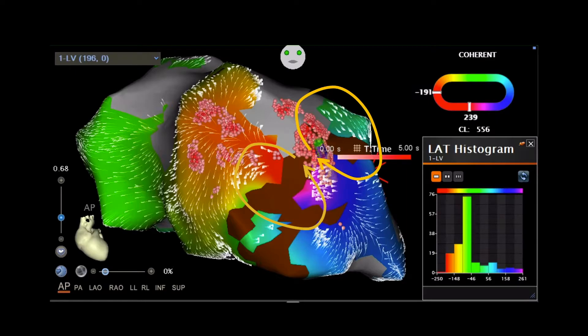However, this is an interesting case which shows that even using point-by-point mapping and just after having around 200 points, we were able to have an accurate estimate of the circuit of the clinical VT and the location of the critical isthmus of this VT.